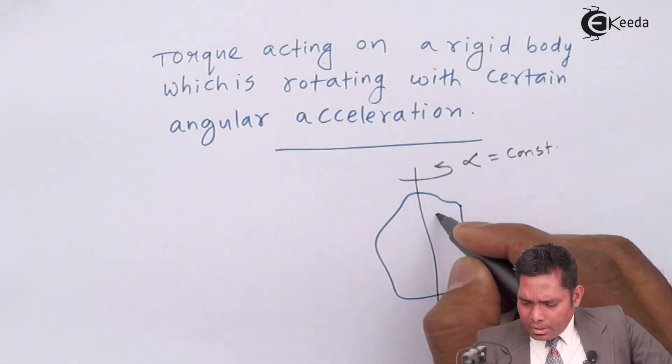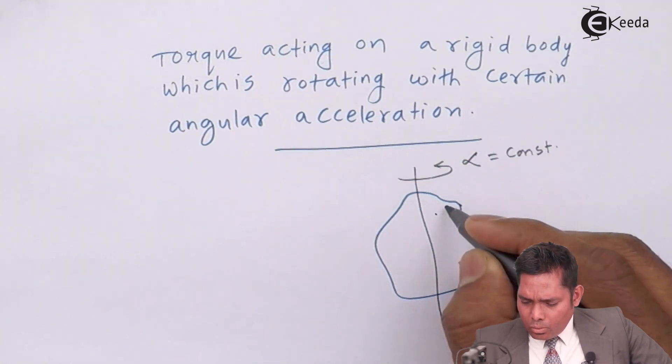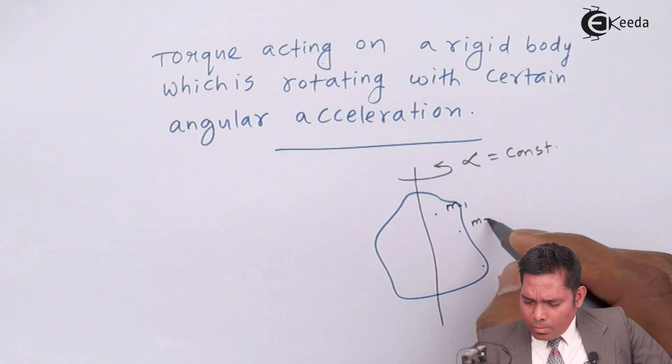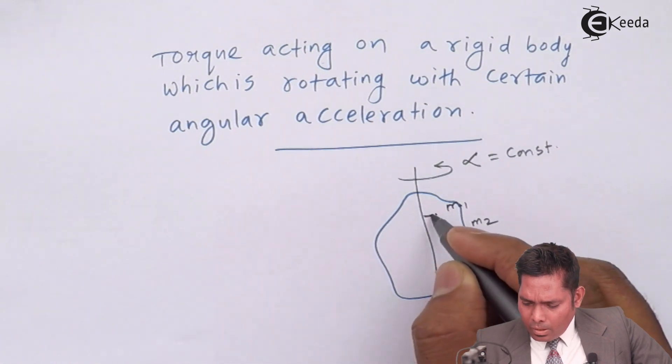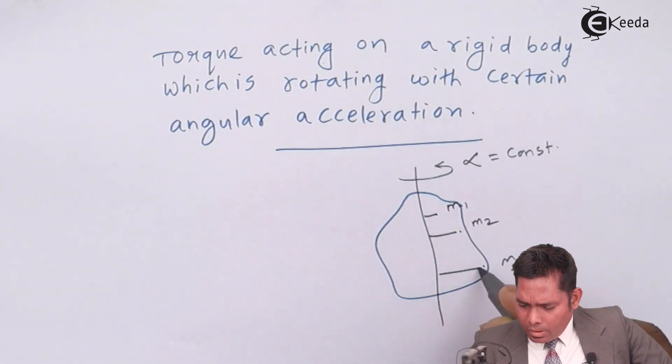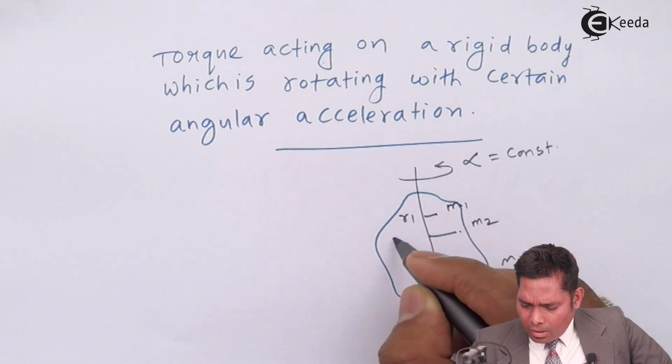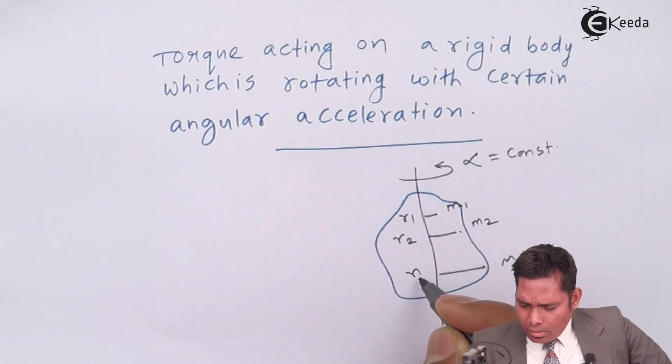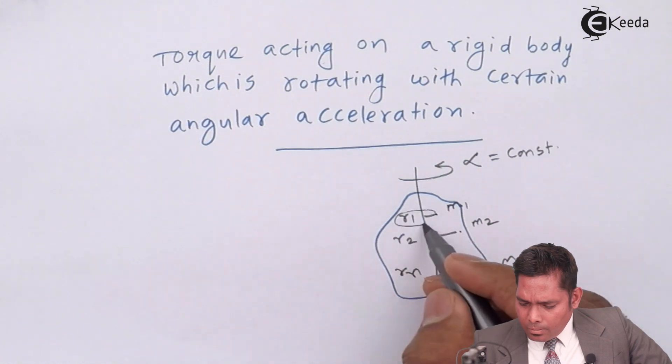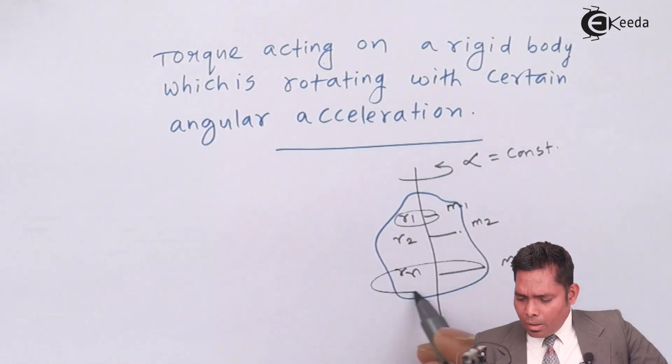I may consider a few points: m1 mass, m2 mass, mn mass from a certain distance which is r1, r2 and rn from the axis of rotation and they're moving in a circle. Each point is moving in a circle path.